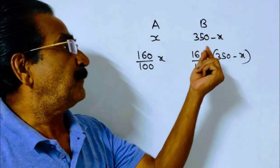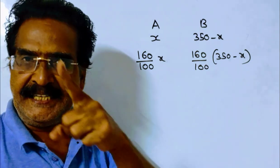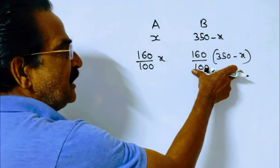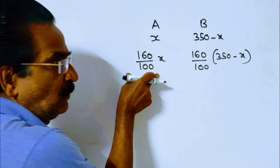Friends, it is given that the marked price of article B is Rs. 80 more than the marked price of article A. So, this minus this is equal to 80.